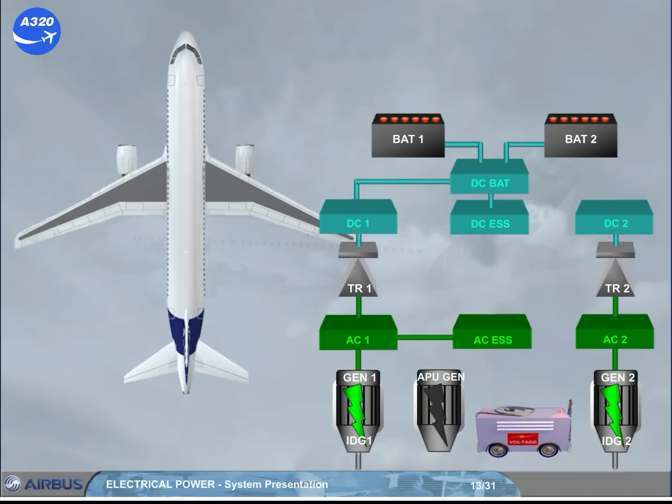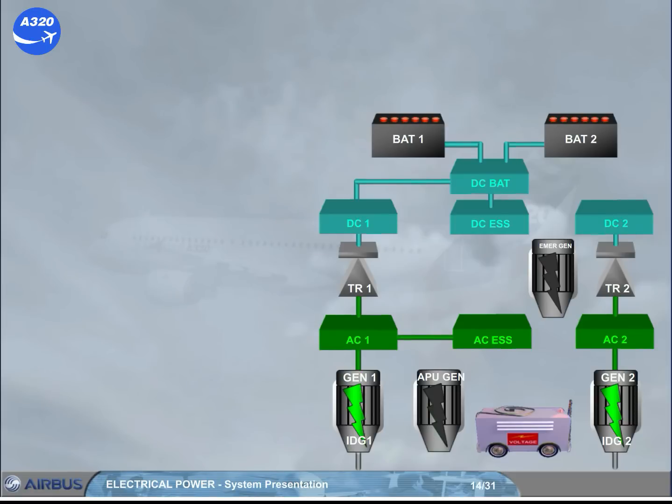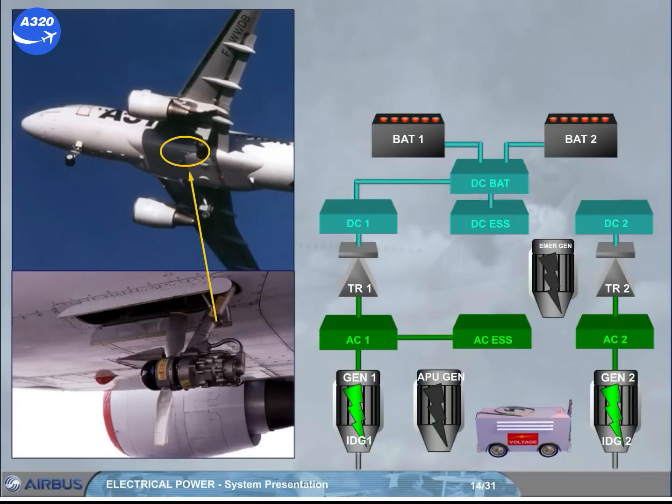As a backup, there is a hydraulically driven emergency electrical generator, ImerGen. The hydraulic power to drive the emergency generator is provided by a RAM air turbine, RAT, located in the belly fairing, which extends in case of severe electrical or hydraulic failures.